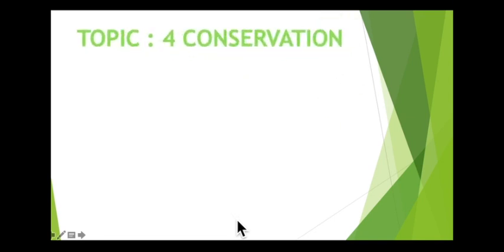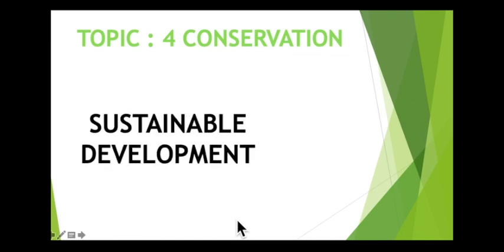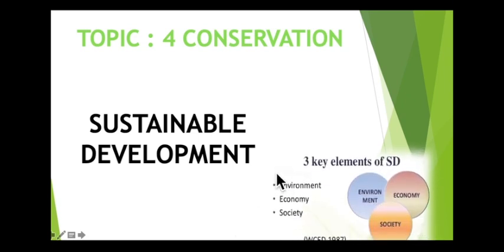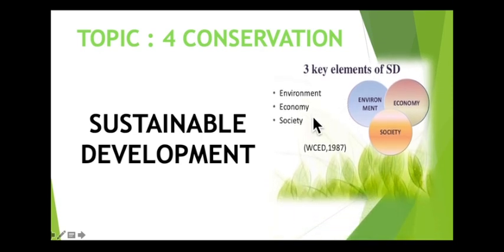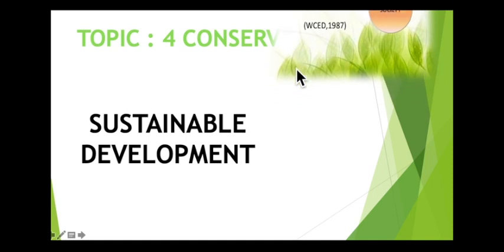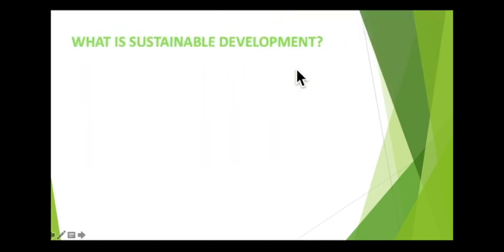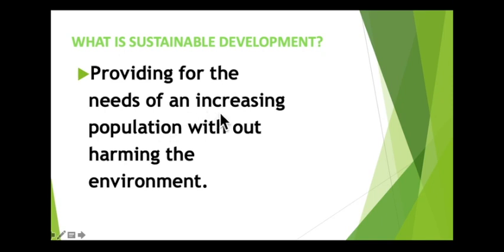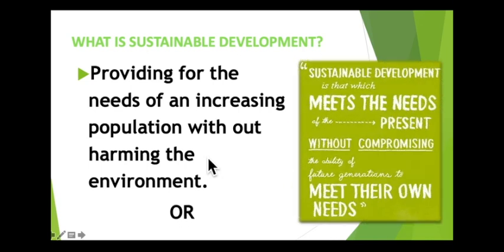Today we are going to continue our topic on conservation, and the name of this part is sustainable development. There are three key elements of sustainable development, which include environment, economic, and society. Sustainable development means providing for the needs of an increasing population without harming the environment — in other words, meeting the needs of the present without compromising the ability of future generations to meet their own needs.